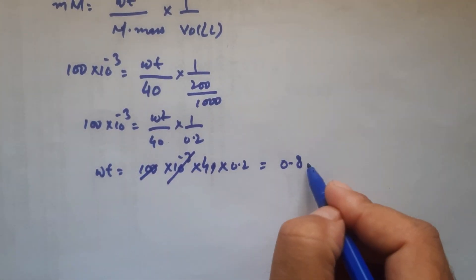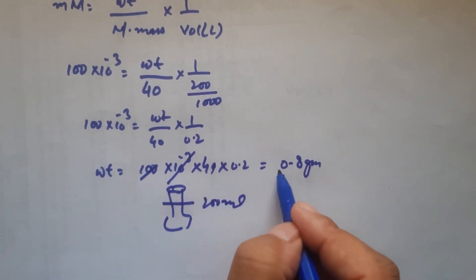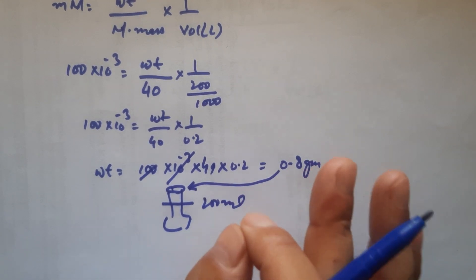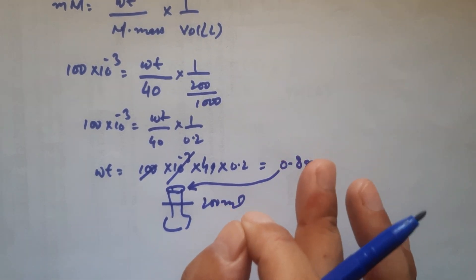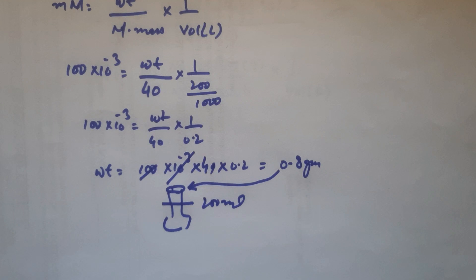Now you need to take 0.8 grams and dissolve it in a flask having 200 mL volume. Just put it over here, dissolve it completely, and your solution of 100 millimolar in 200 mL is ready. I hope you have found this tutorial useful. Please leave a like, subscribe, and thanks for watching.